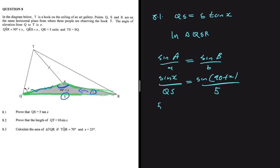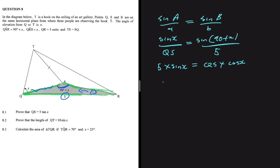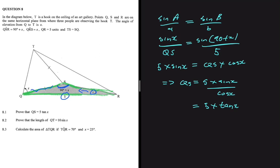Cross-multiplying gives us 5·sin(x) = QS·sin(90 + x). Since sin(90 + x) = cos(x), dividing both sides by cos(x) gives QS = 5·sin(x)/cos(x), which equals 5 tan(x) — exactly what we needed to prove.